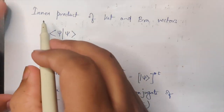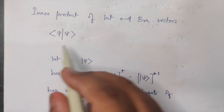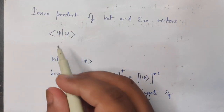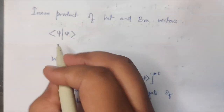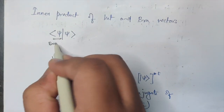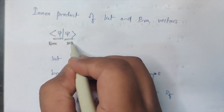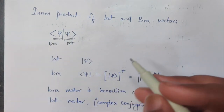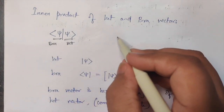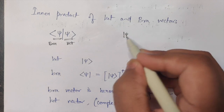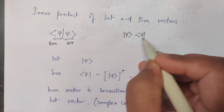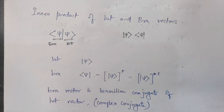Now let's talk about the inner product of ket and bra vectors. This particular term is called the inner product — I've taken a bra vector and a ket vector together. Now if somebody asked you to do an outer product, outer products are done the other way around — it's like ket-Phi times bra-Phi.